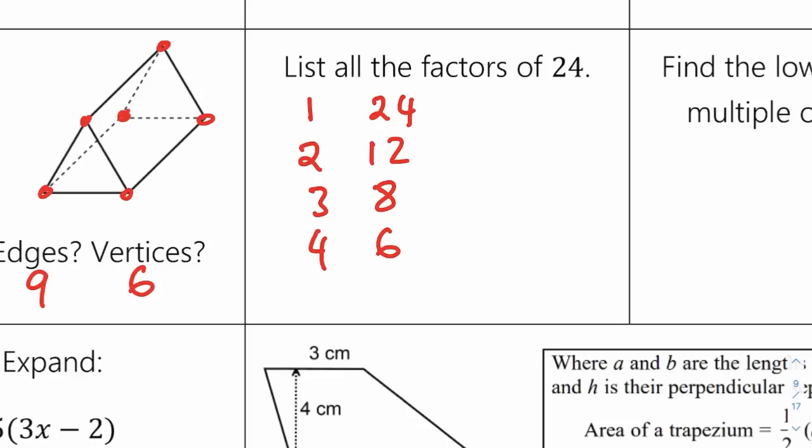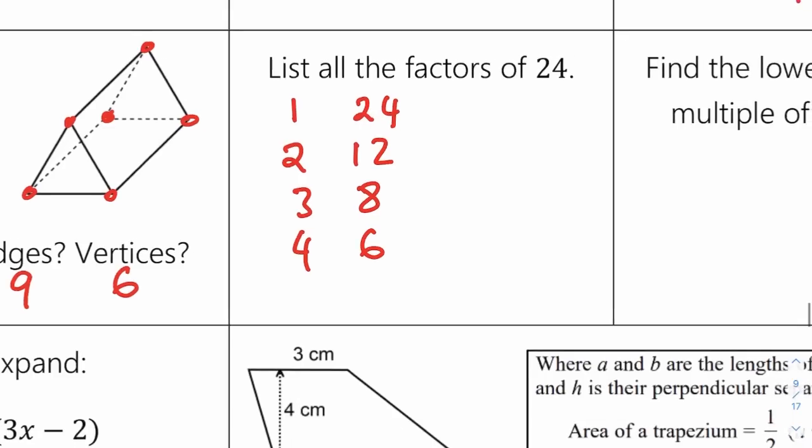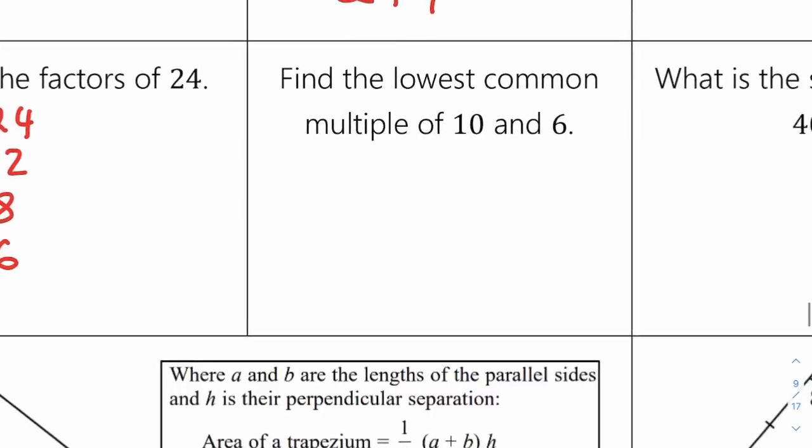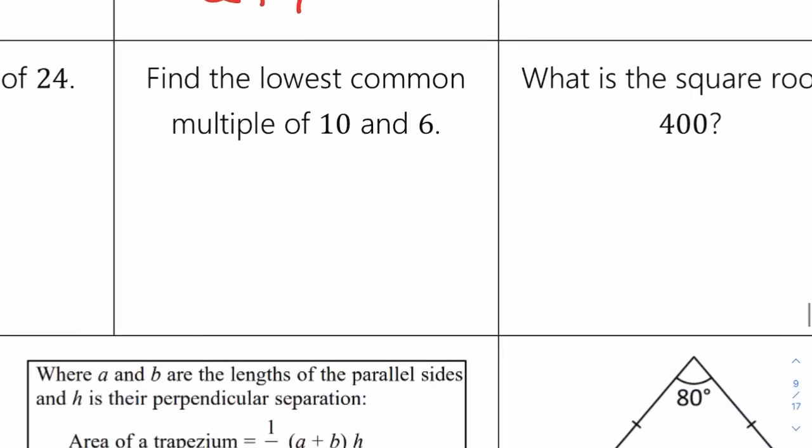That gives us 8 factors in total — 1, 2, 3, 4, 5, 6, 7, 8 — and that's all the factors of 24. Find the lowest common multiple of 10 and 6.